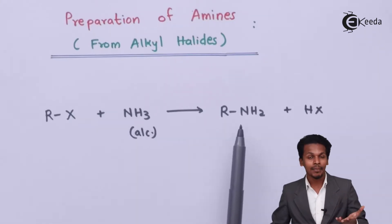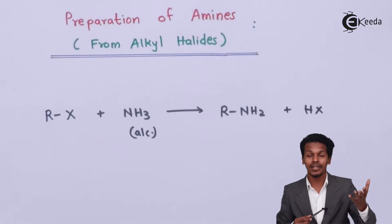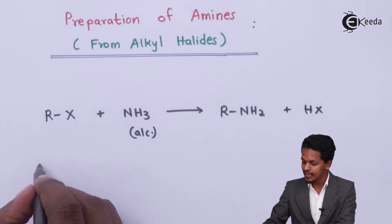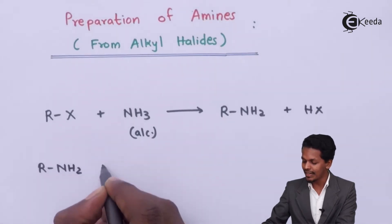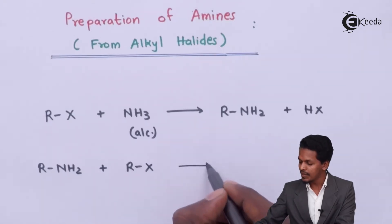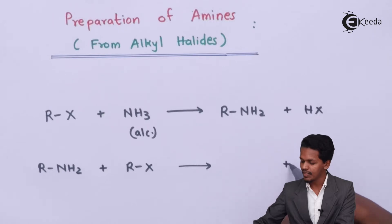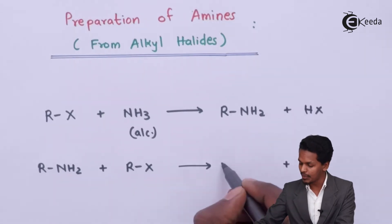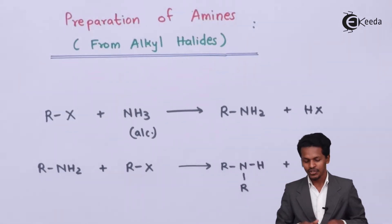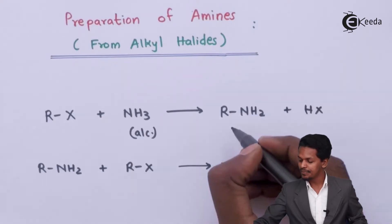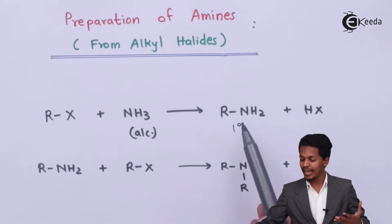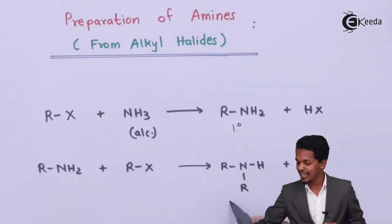That is the reason this primary amine will react with other molecules of alkyl halide RX. So RNH2, that is the primary amine, reacts with the remaining RX, and HX is removed as a byproduct. The remaining main product is R–NH–R, which is a secondary amine. So we have converted the alkyl halide first into a primary amine, and that primary amine then reacted with alkyl halide to form a secondary amine.